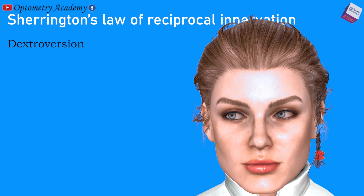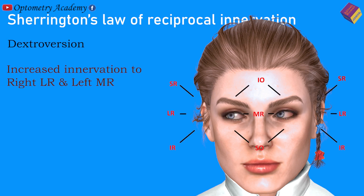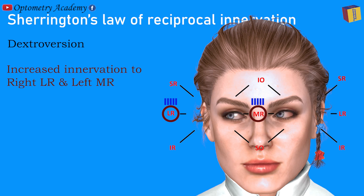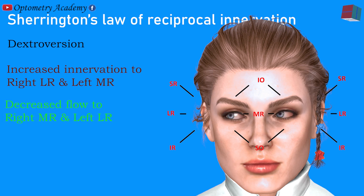For example, during dextroversion, an increased innervation flow to the right lateral rectus muscle.